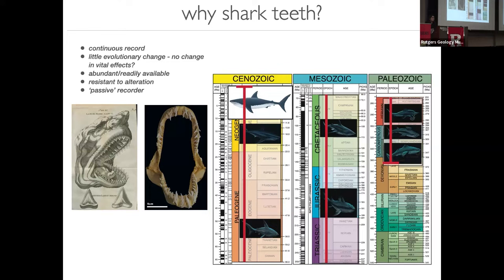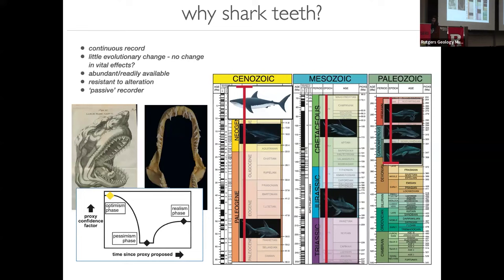The last and perhaps most important thing about shark teeth is that they are what we call a passive recorder. Sharks were nowhere in that picture of the calcium cycle. Which means that sharks are just existing in the ocean. They are neither a source nor a sink of calcium, they're just passively recording the environment in which they're in, or so we think.